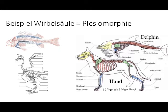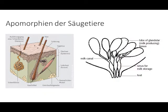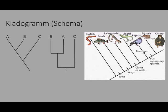Hingegen sind Merkmale wie Haare, Schweißdrüsen und die Produktion von Milch typisch für Säugetiere, und zwar nur für Säugetiere. Folgerichtig handelt es sich hierbei um Apomorphienmerkmale, die die Säugetiere kennzeichnen. Anhand solcher Merkmalsanalysen, bei denen die Synapomorphien der Lebewesen ermittelt werden, entstehen entsprechende Diagramme, die man als Kladogramme bezeichnet. Kladogramme sagen aus, wer mit wem näher verwandt ist.